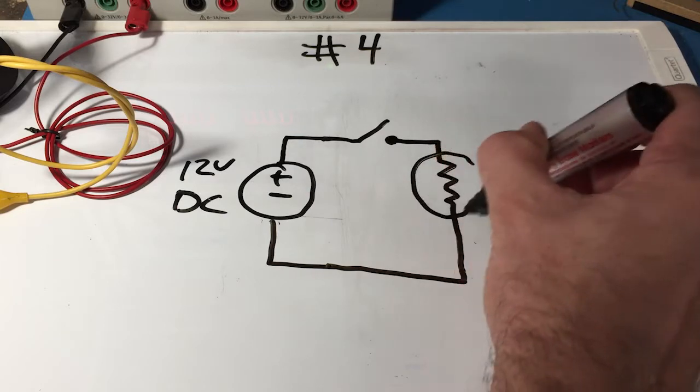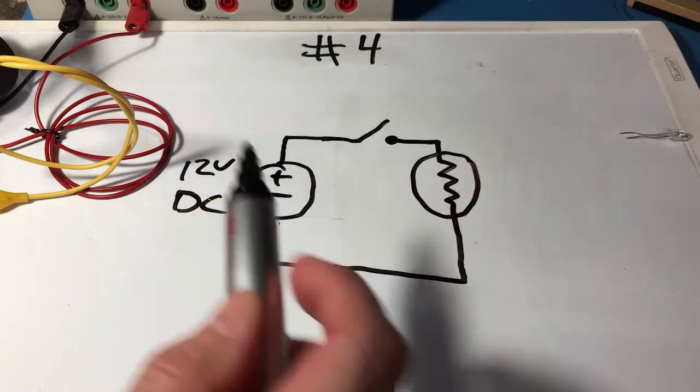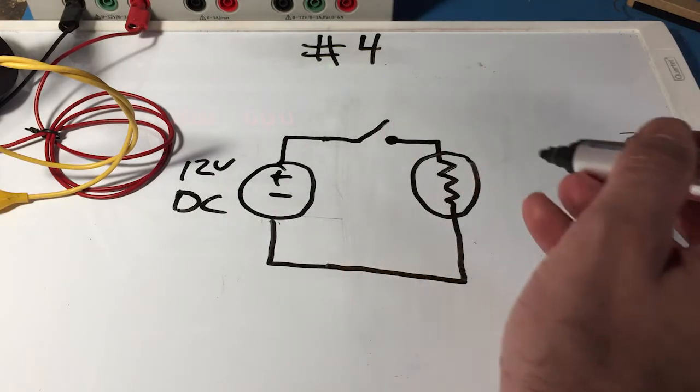We have our switch up here. It's called a normally open switch, meaning it's normally open because you don't want your brake lights on all the time, only when you push down on the pedal and then the switch closes.